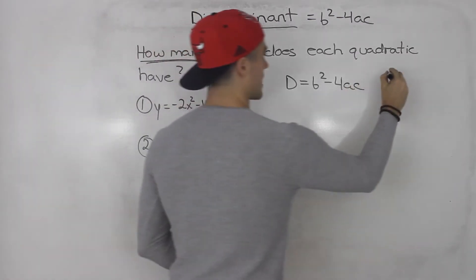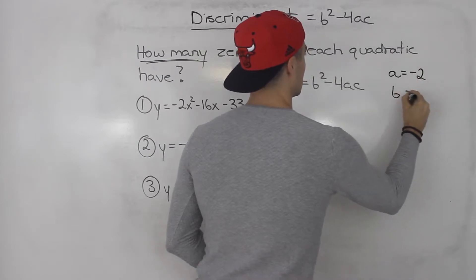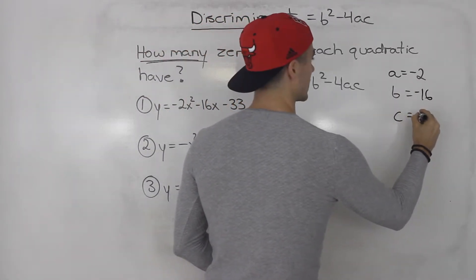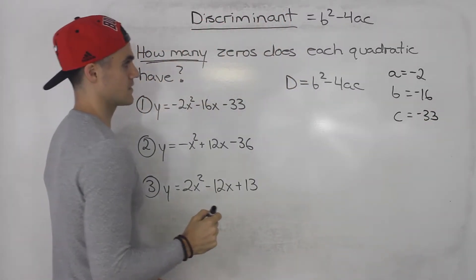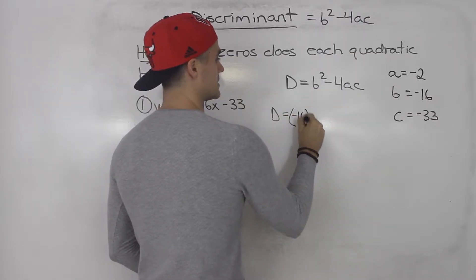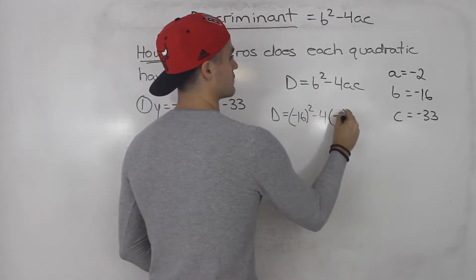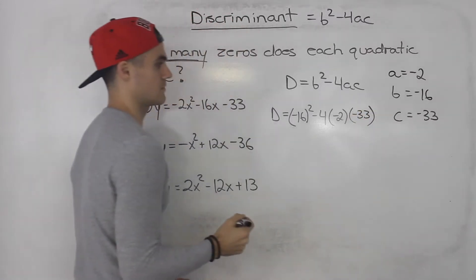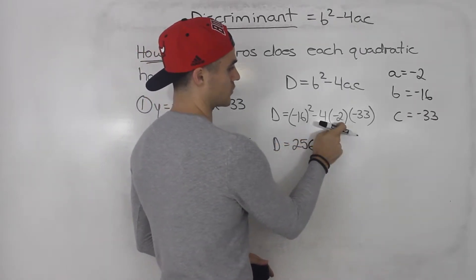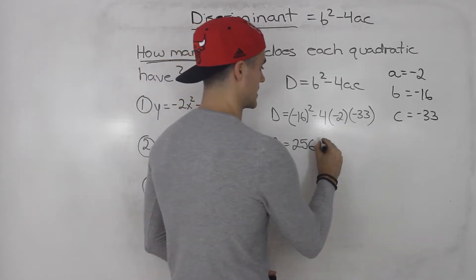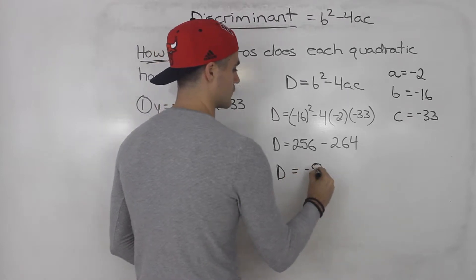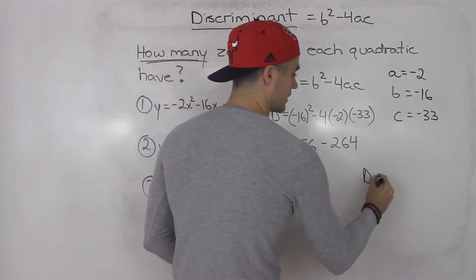For the first quadratic, the a value is negative 2, the b value is negative 16, and the c value is negative 33. So the discriminant is negative 16 squared minus 4 times negative 2 times negative 33. Negative 16 squared gives us 256. Negative 4 times negative 2 is 8, and 8 times negative 33 gives us negative 264. So 256 minus 264 gives us negative 8 — the discriminant is less than zero.